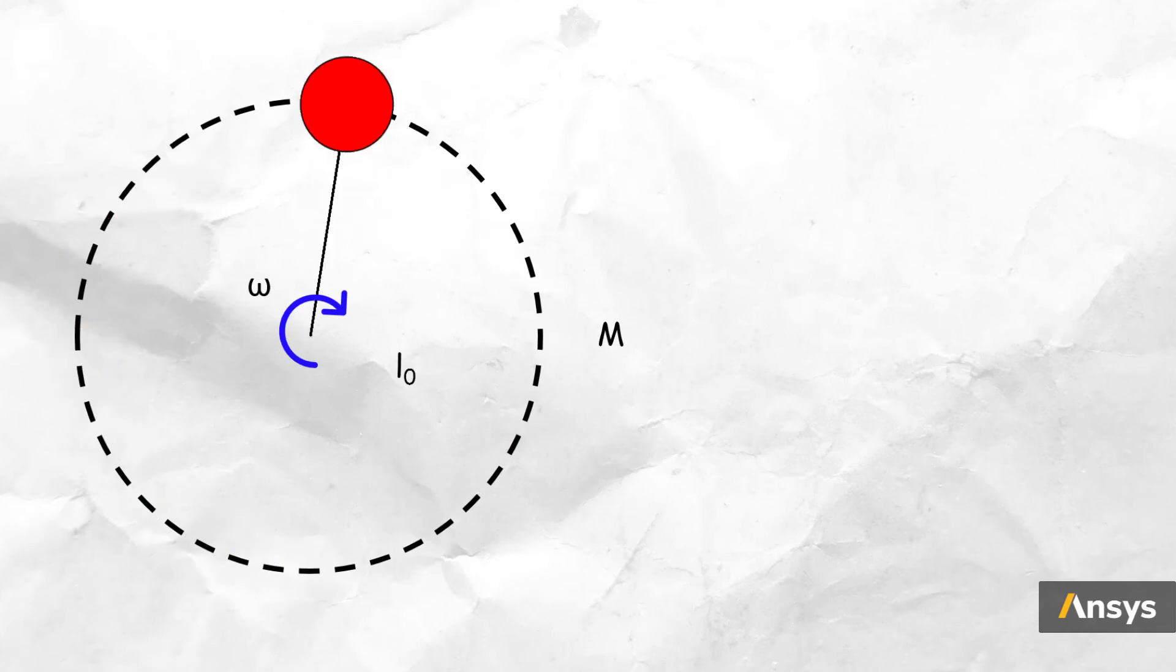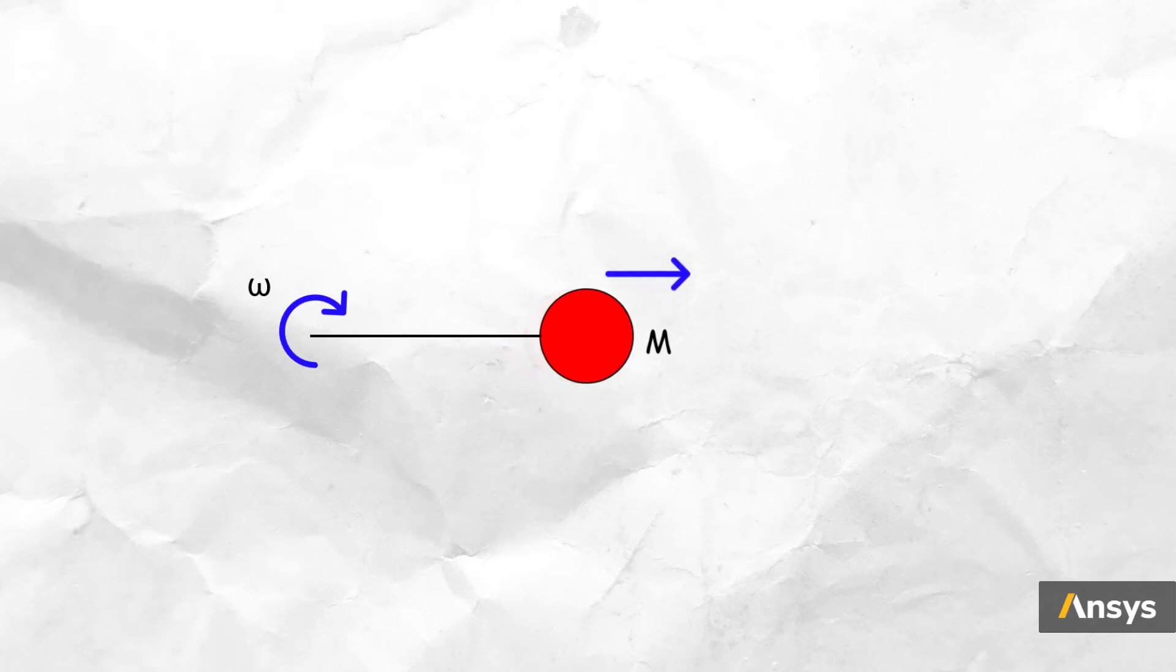Now, if we start rotating this weight about this point at a constant angular velocity omega, it experiences a centrifugal force of magnitude M omega square L0 that acts radially outward. Now, since the string is flexible, it tends to stretch out, and as a result, the length is now increased. As a result, the centrifugal forces change, and so does the length of the string.